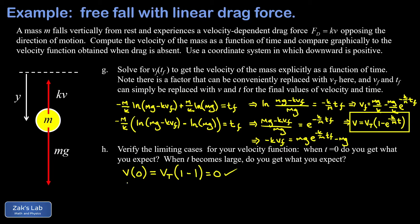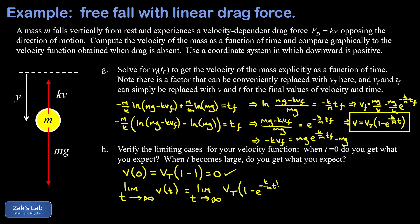The second limiting case is as t goes to infinity. The term e to the negative k over m times t has a large negative exponent, so it equals one over e to a large positive exponent, which goes to zero. This leaves v_t times one, meaning the velocity approaches the terminal velocity v_t. That's exactly what we expect — the drag force eventually balances gravity and the object reaches a constant terminal velocity.